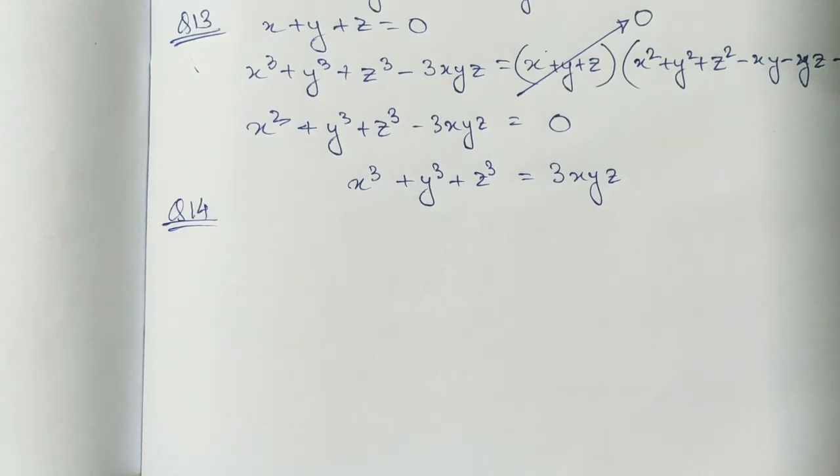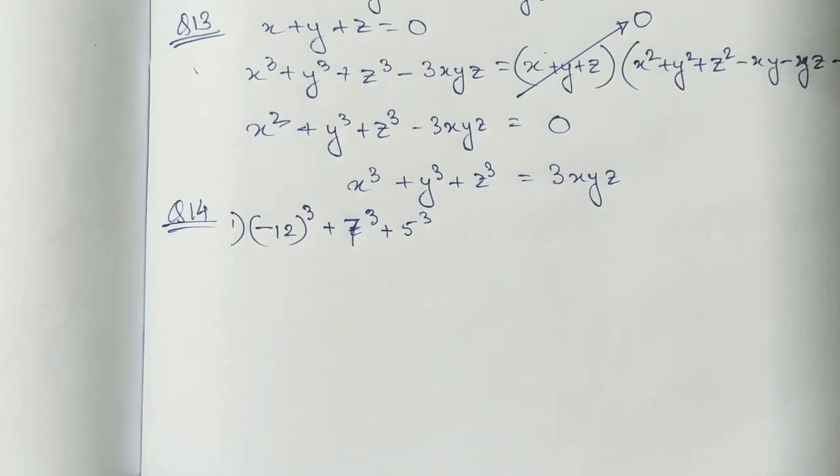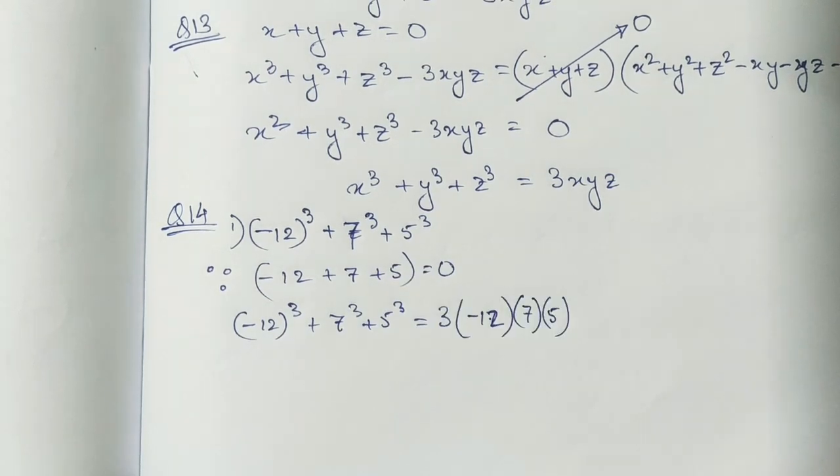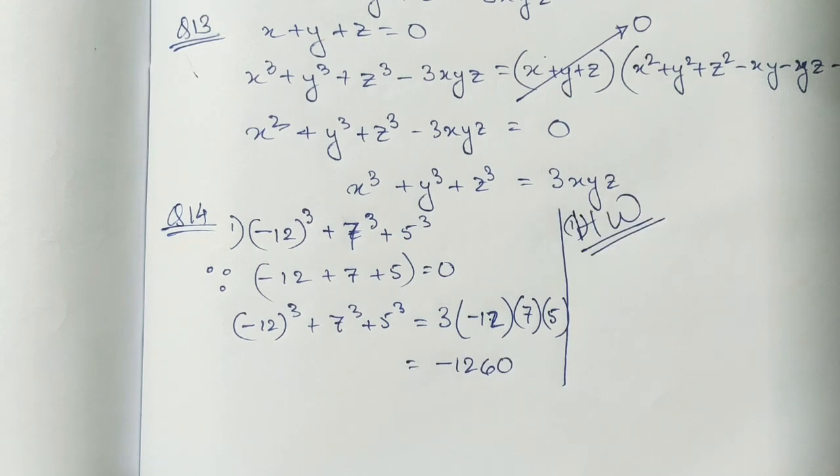Now moving on to question number 14, we will be using the result of question number 13 to find these cubes. Since their addition is zero, therefore sum of their cubes will be 3 into product of those numbers. Similarly we can do the rest of the parts.